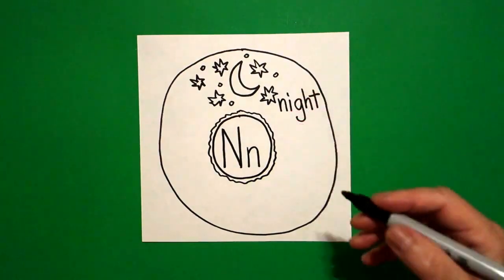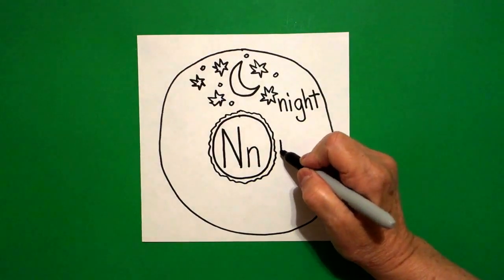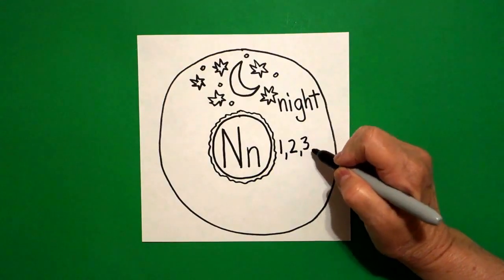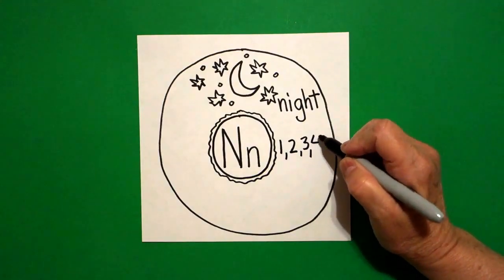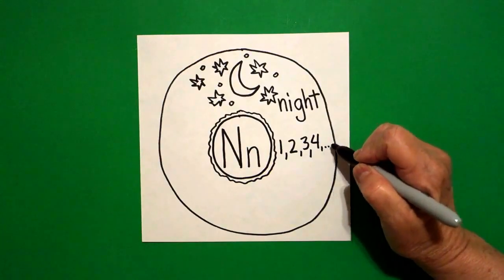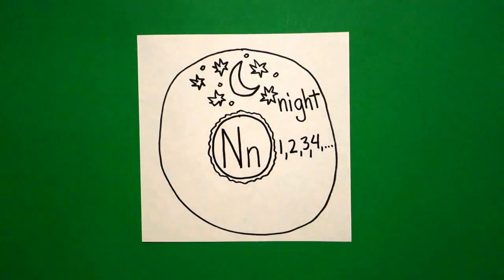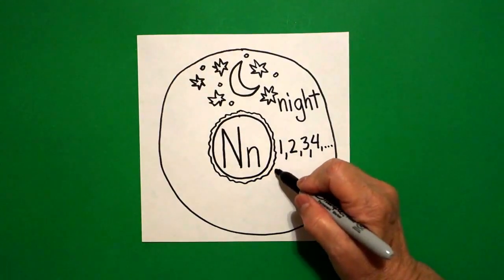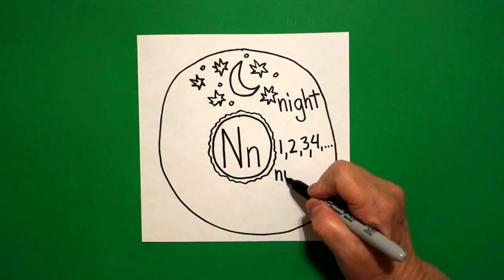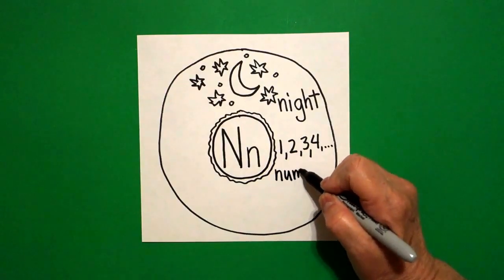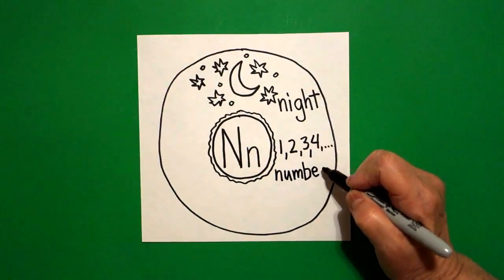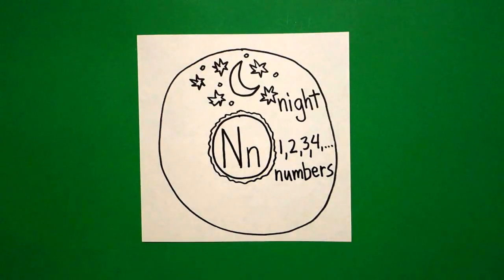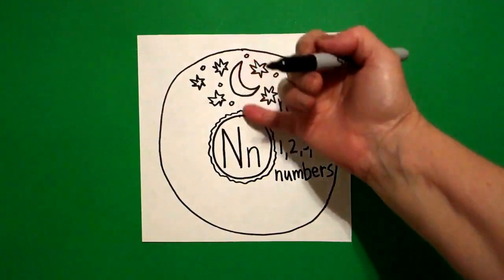I come down to the right, and I write a number one, comma, two, comma, three, comma, four, comma, and then one, two, three little dots, because those keep going. And these are all numbers. N-N-U-M-B-E-R-S. Numbers.